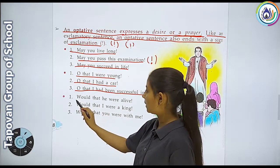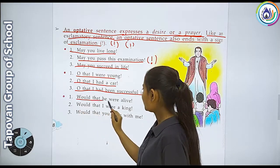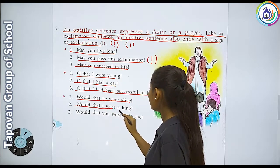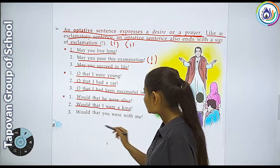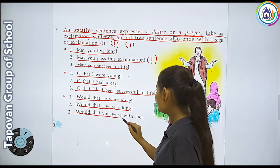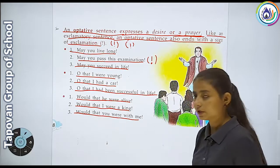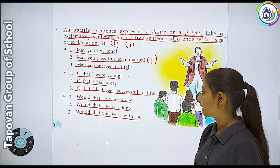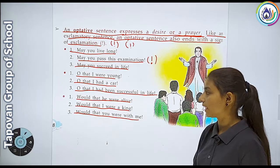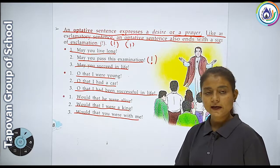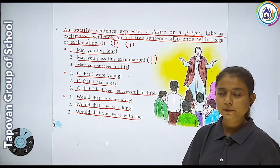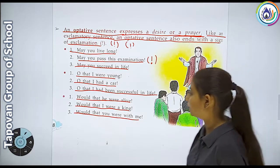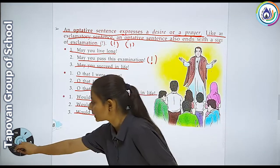Usi tarah: 'Would that he were alive!'; 'Would that I were a king!'; 'Would that you were with me!' - ye sab optative sentences hain. Aur humein yaad rakhna hai ki sentence ke end mein exclamation sign lagana hai.